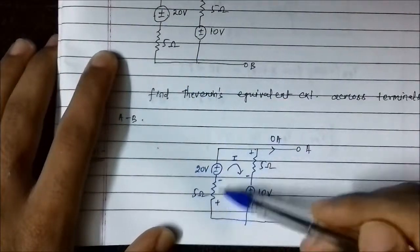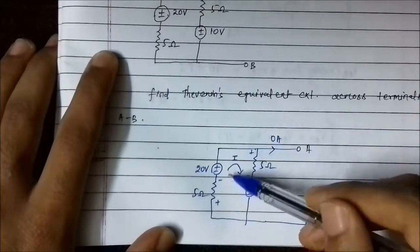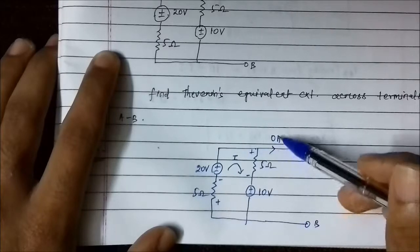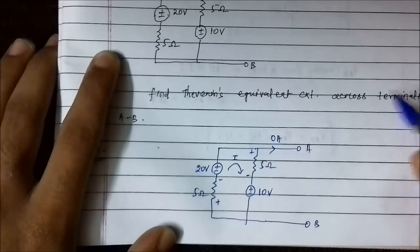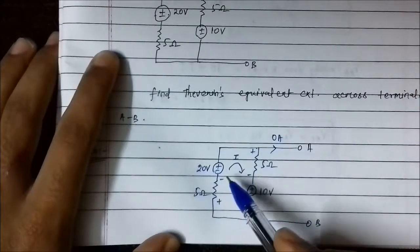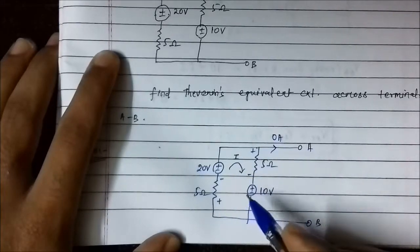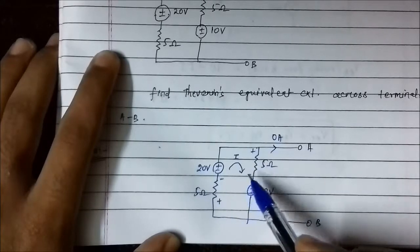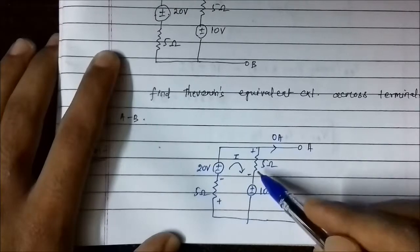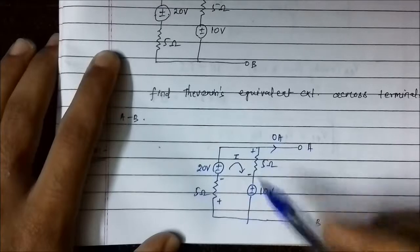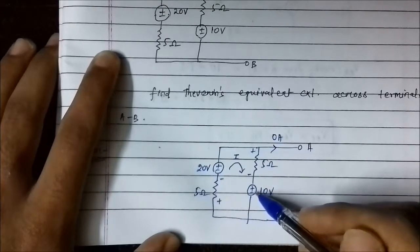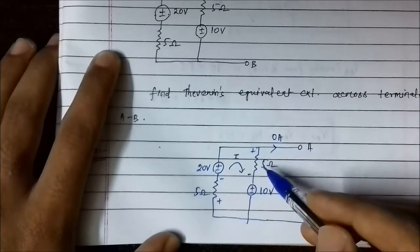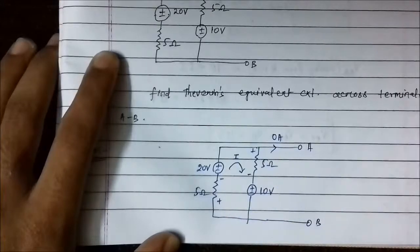This is a closed loop — a closed path. Assign a loop current I. Since the A-B branch is open circuited, no current flows through that path, so it is 0 ampere. Considering this mesh, write the KVL equation: 20 minus 5I — since current flows from positive to negative polarity of an impedance, it is a negative voltage drop — then minus 10 volt, as we are moving from positive terminal to negative terminal of the voltage source.